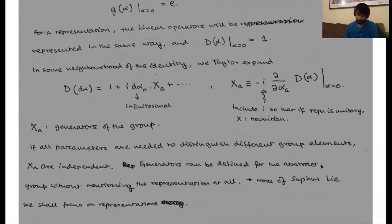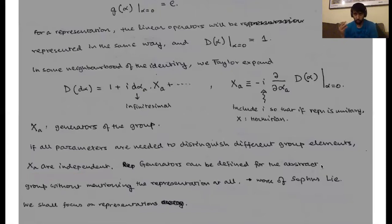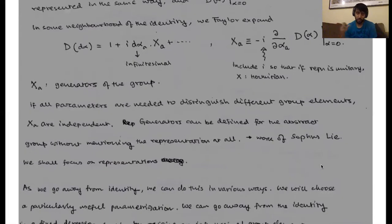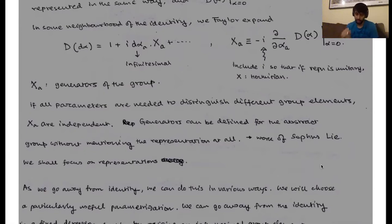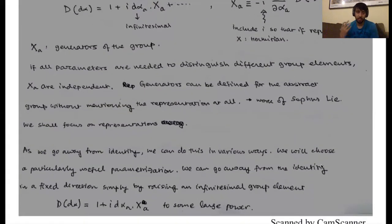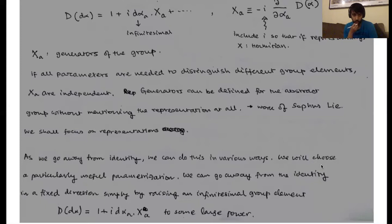Now if all the parameters needed to distinguish the different elements are independent, then the X_A's are actually independent. Though we can define the generators for an abstract group without mentioning the representation at all, we'll actually go through the route of doing this via representation. This is, if you wish, the more physics way of trying to do it. Nature is going to be linked up to what representations we use and so on.